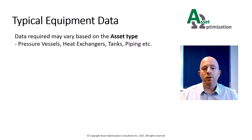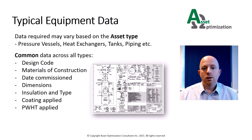Typical equipment data depends on the asset type being analysed during the risk assessment. This could be pressure vessels, tanks, piping, columns or heaters. Also, the risk model may require specific asset data. Typical equipment data includes design codes, materials of construction, commissioning date, physical dimensions, whether any post-weld heat treatment was used, and if the equipment is insulated and what type of insulation has been used.